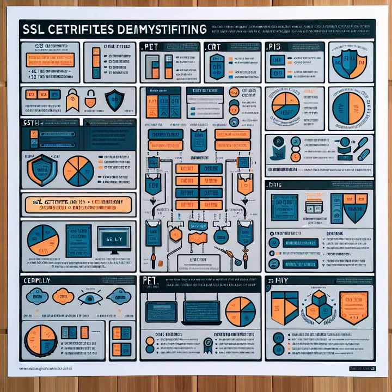Before we dive in, let's quickly understand what SSL certificates are. SSL, or Secure Sockets Layer, certificates are small data files that establish secure connections between web servers and browsers. They bind cryptographic keys to an organization's details, ensuring encrypted and protected communications. So, what are the different types of SSL certificate files we will be focusing on today? Let's get started.